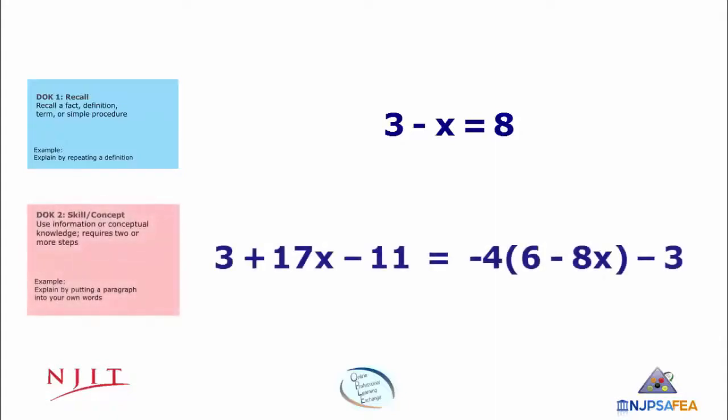Imagine a school in which some classes only expect students to solve DOK Level 1 equations, like the first example, and other classes expect students to solve Level 2 equations, like the second example. Students in these different classes would not be receiving the same education because the expectations of student learning are not the same. This is why collaboration and dialogue within a PLC is at the heart of the CAR process. Within a school, teachers should have a common understanding of what they expect students to know and do. An important component of building this common understanding is determining the DOK levels together in the PLC.